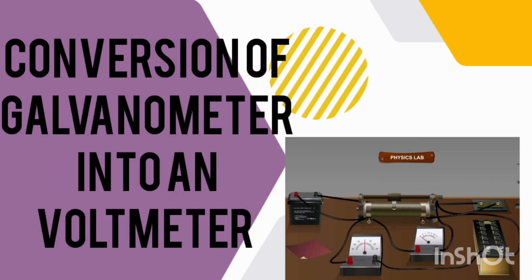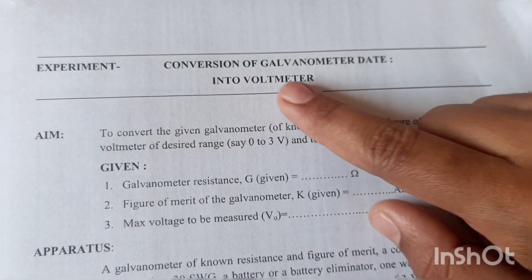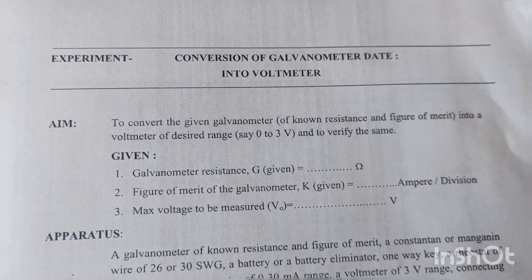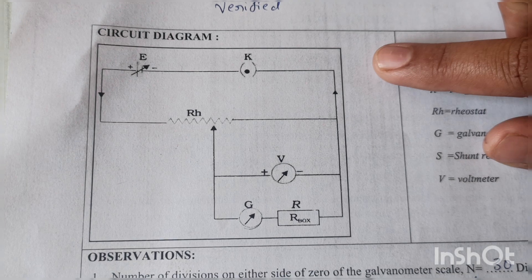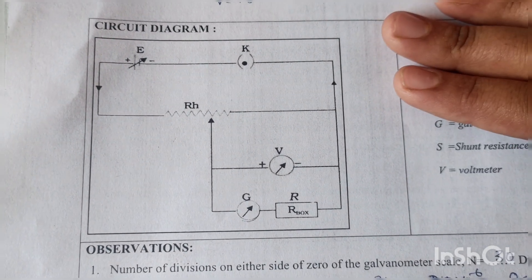Hello students, welcome to JSS RSHPU physics channel. Today we are going to conduct the experiment conversion of a galvanometer into voltmeter. This is a circuit diagram of the experiment. According to the circuit diagram, how to arrange the apparatus?